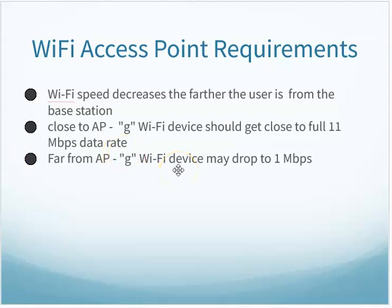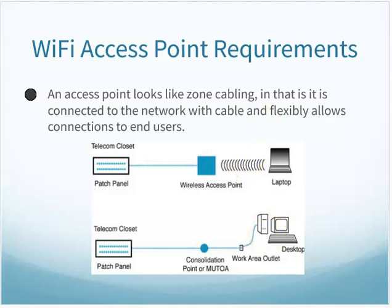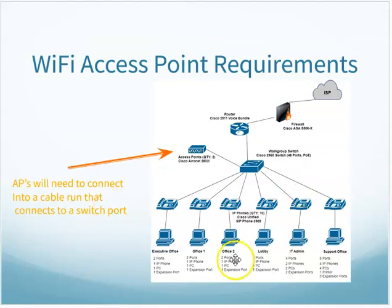The further you get from an access point, your bandwidth typically drops. Back in the days of wireless G, if you were close you might get the full 11 Mbps, but further away it could drop to 1 Mbps. An access point starts looking like zone cabling — you'd have a cable out to the access point, and then that last segment, instead of a patch cable, is the wireless connection.